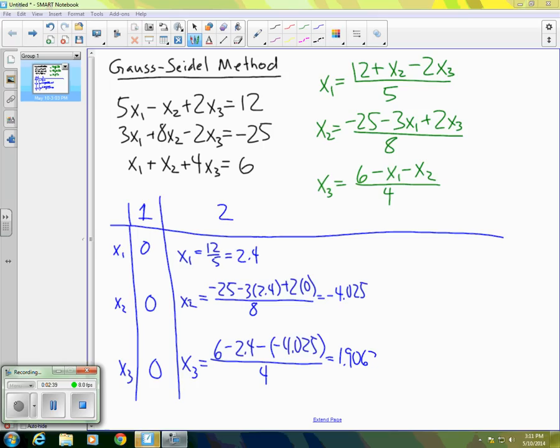So those are our second values. Remembering that the actual values of these things are 1, negative 3, and 2, we can see that the x3 is pretty close right now. And of course, that would make sense because it had the advantage over the other two of using the updated values of x1 and x2.